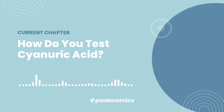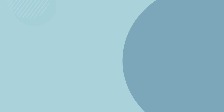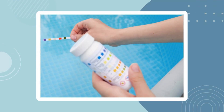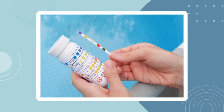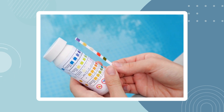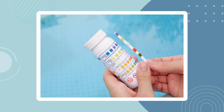How do you test cyanuric acid? Most pool testing kits allow you to test your cyanuric acid level, along with pH, alkalinity, calcium hardness, and free chlorine. Pool test strips are among the most common — they can be dunked directly into your water before comparing the coloured strips to the chart provided. One of those coloured strips will represent your CYA level.